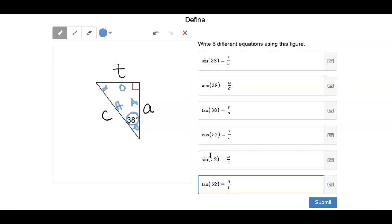t squared equals c squared. You could also do